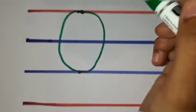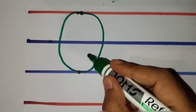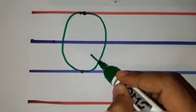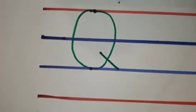Inside the circle, draw a slanting line till the third line. This is how we write the letter Q.